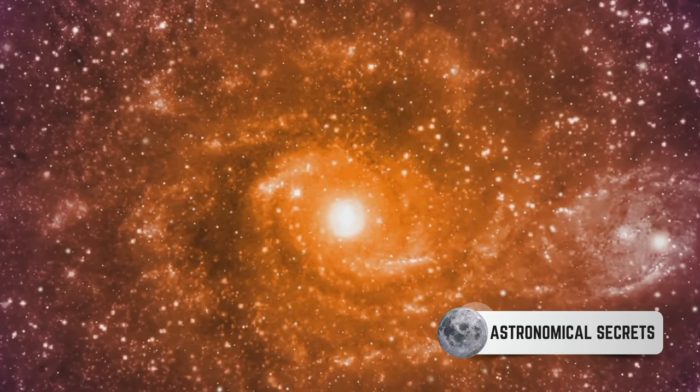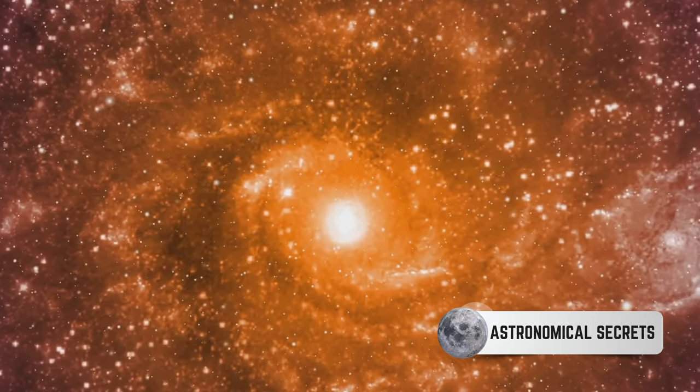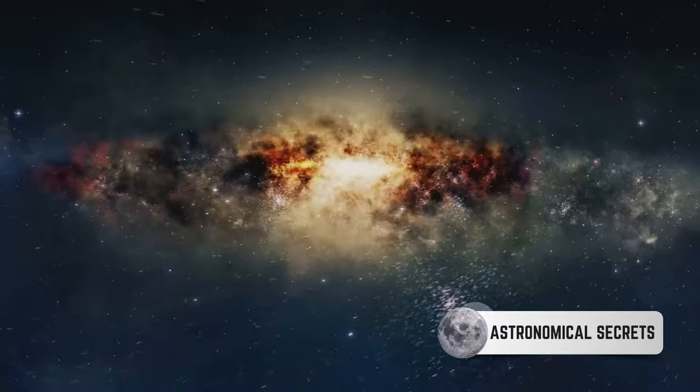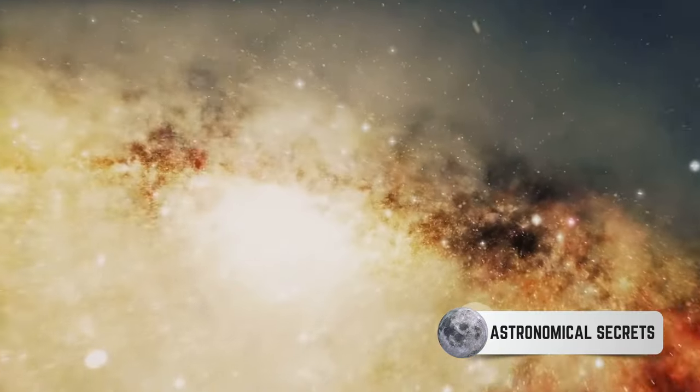A famous example of a spheroidal galaxy is the M87 galaxy, located in the Virgo cluster. This elliptical galaxy is notable for its jet of energetic plasma that extends outward from its core for about 5000 light-years.